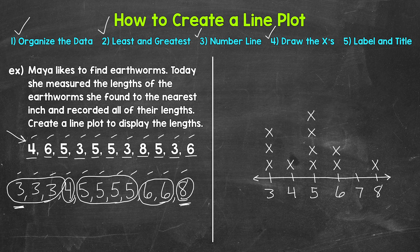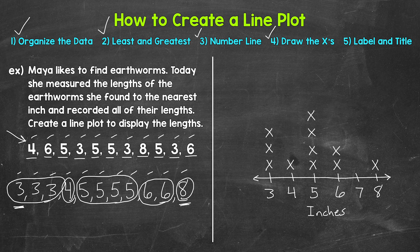Lastly, we need to label and write a title. The title and label are very important for someone else looking at this — they help a viewer understand the line plot and the data being presented. Let's start with the label: the numbers on the number line represent inches, so we write 'inches' underneath. Then we need a title above the line plot that explains what it's about. Let's do 'Lengths of Earthworms.' And that's our label and title.